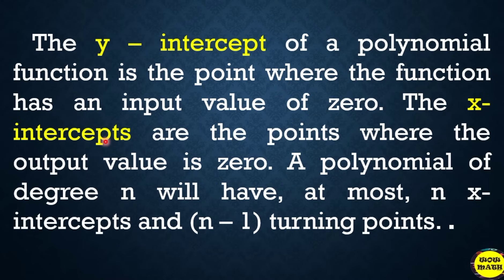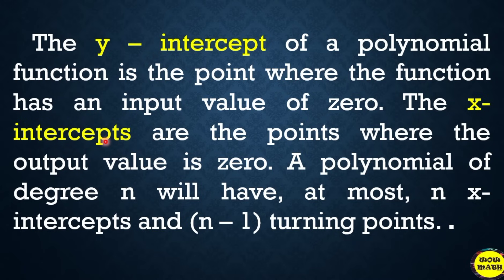So kapag kukuha tayo ng y-intercept, ang gagawin lang natin i-let natin yung x as equal to 0. Yung y-intercept ito yung point na isa sa mga madadaanan ng graph natin. The x-intercepts are the points where the output value is 0. A polynomial of degree n will have at most n x-intercepts — so if the degree is 3, the possible x-intercepts are at most 3: pwedeng 3, 2, or 1 lang. And then n minus 1 is the number of turning points.